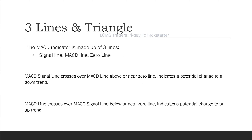The easiest way to describe MACD is three lines and a triangle. The MACD indicator is made up of three lines: the signal line, the MACD line, and the zero line. The signal line crosses over the MACD line above or near zero indicating a downtrend. The MACD line over the signal line below or near zero indicates an uptrend.